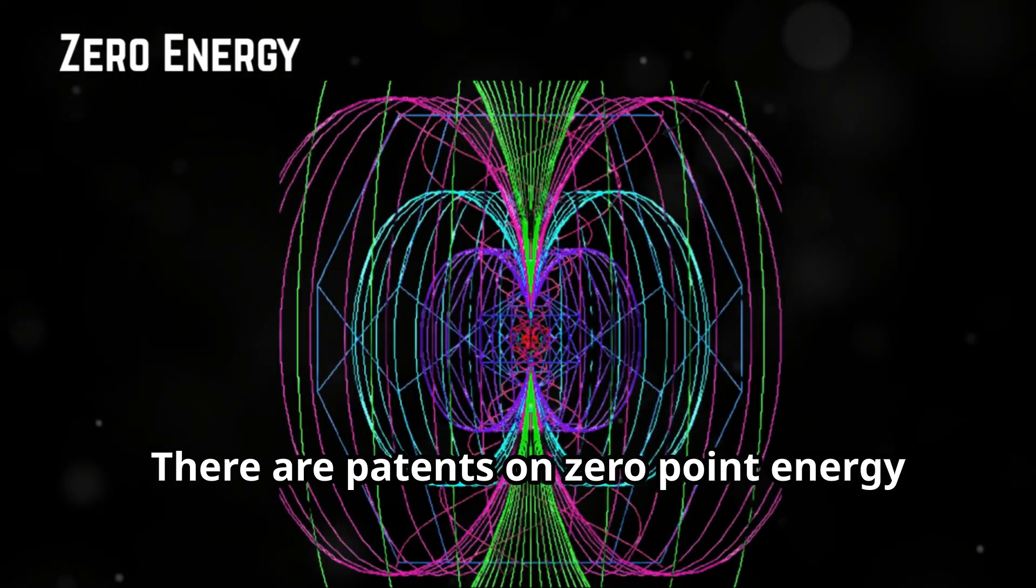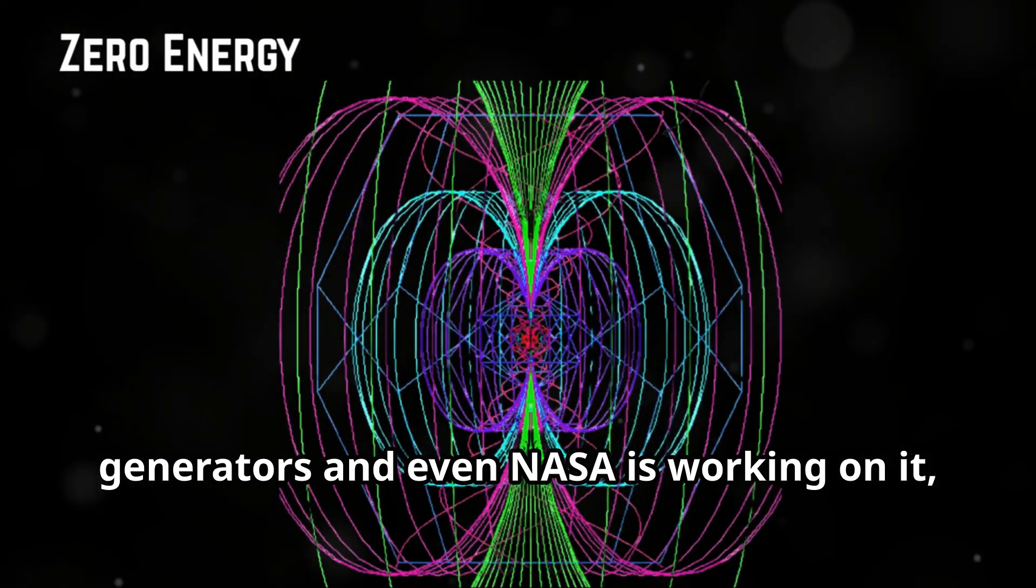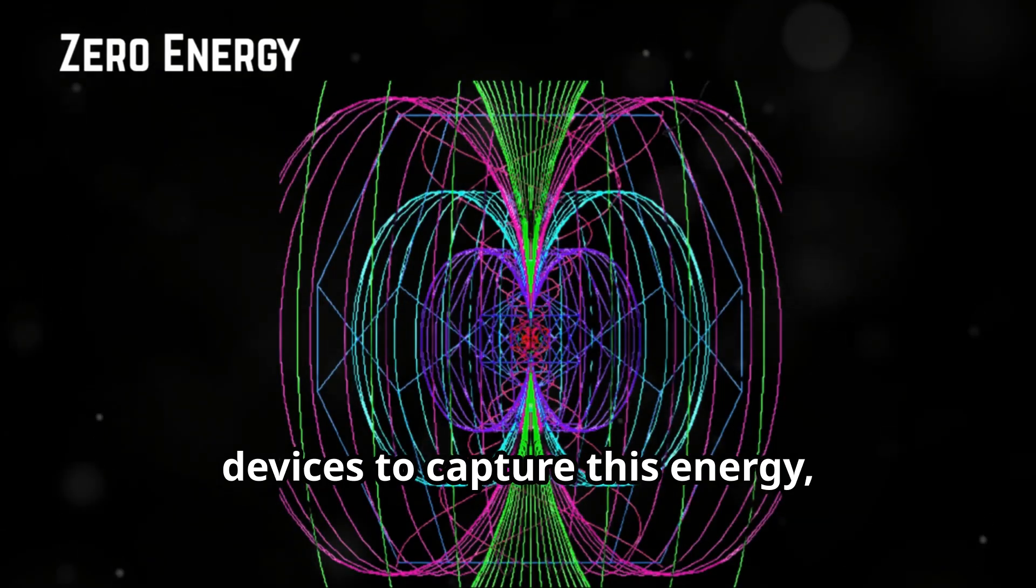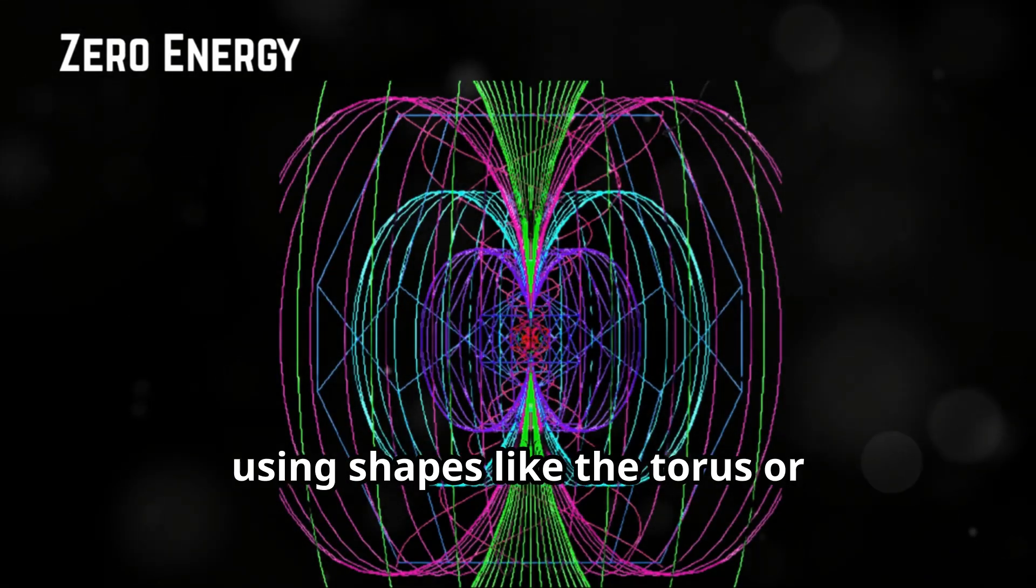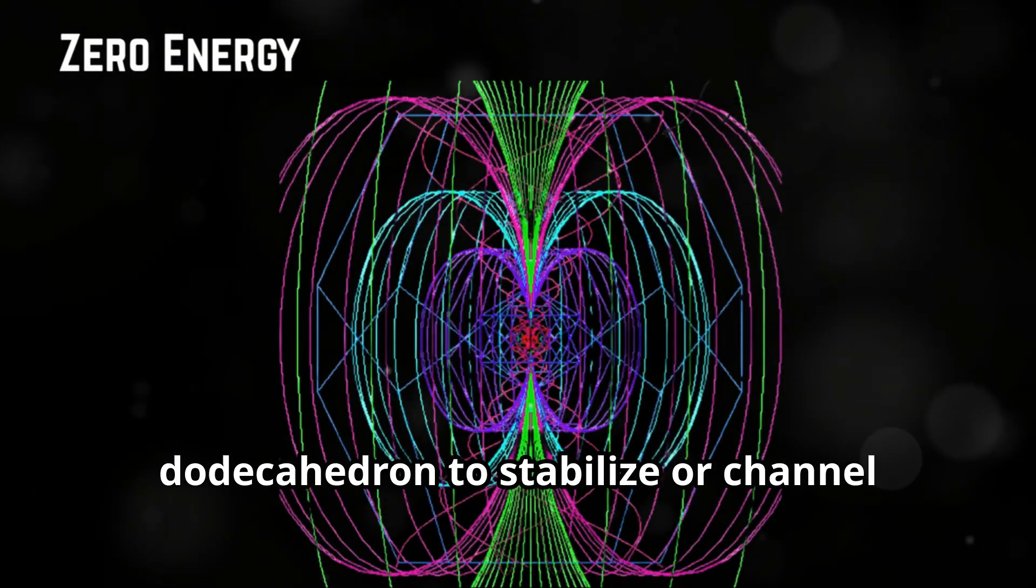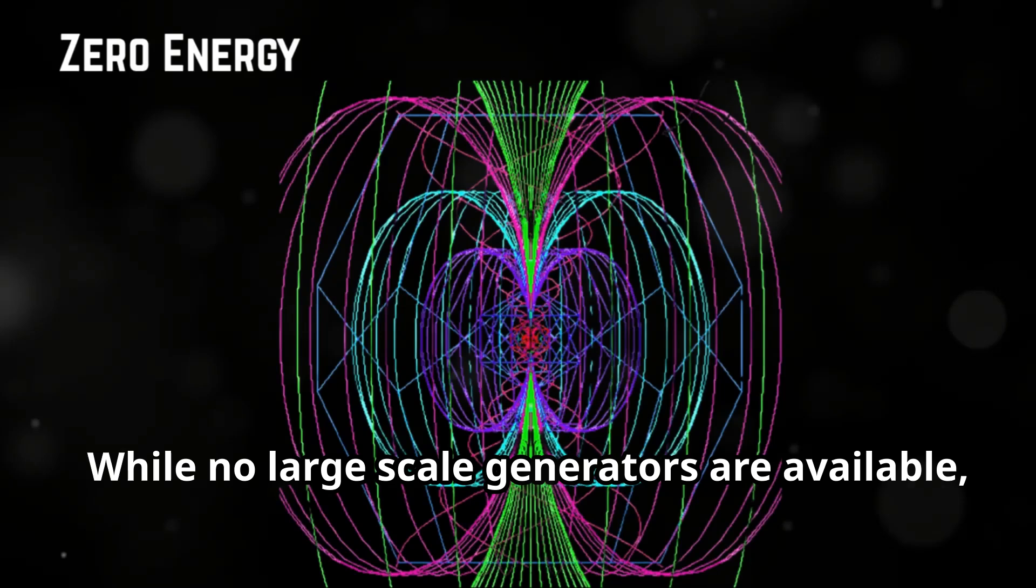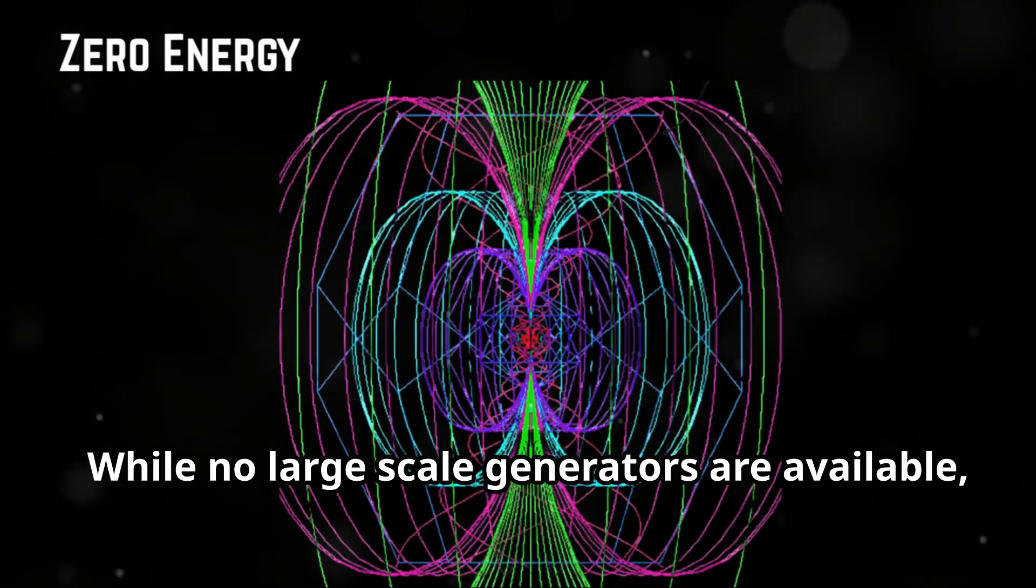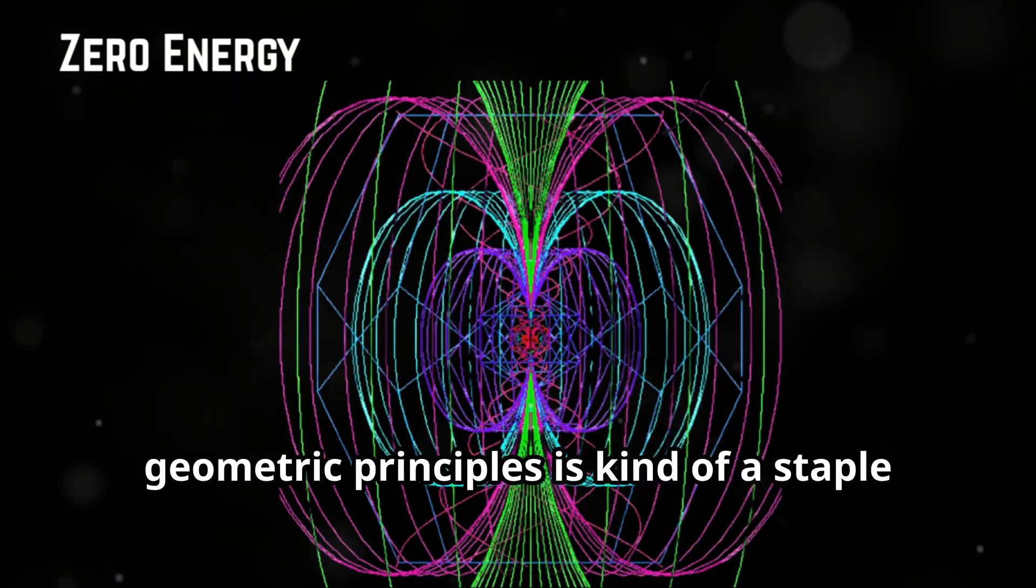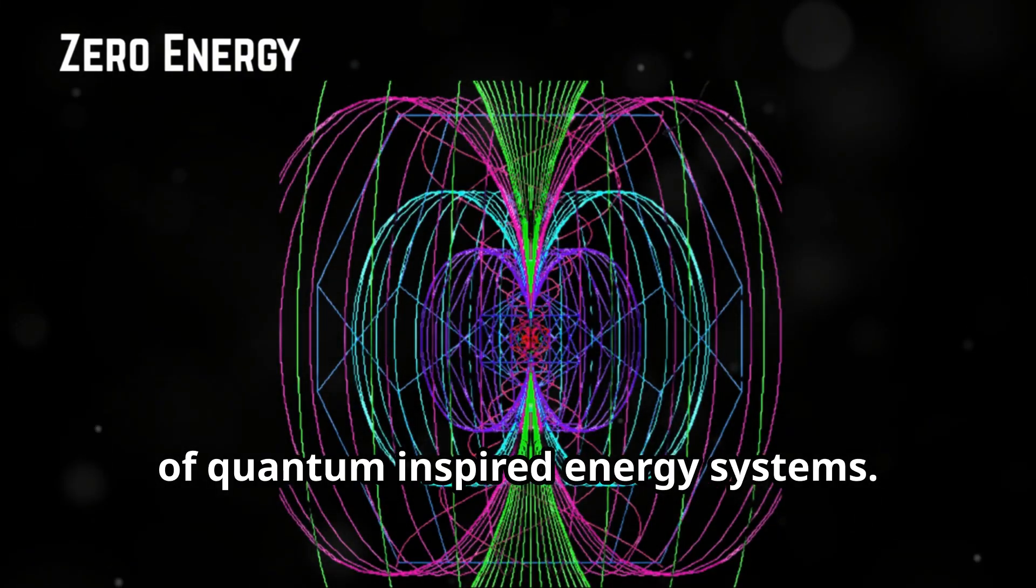There are patents on zero-point energy generators, and even NASA is working on it, so geometry could guide the design of devices to capture this energy, using shapes like the torus or dodecahedron to stabilize or channel quantum fluctuations. While no large-scale generators are available, the integration of zero-point energy with geometric principles is kind of a staple of quantum-inspired energy systems.